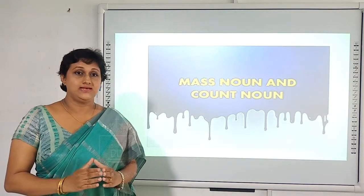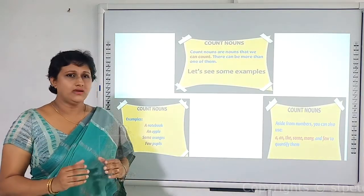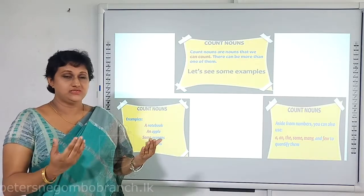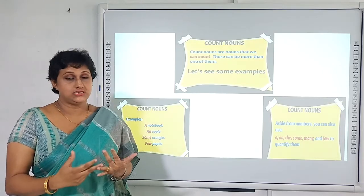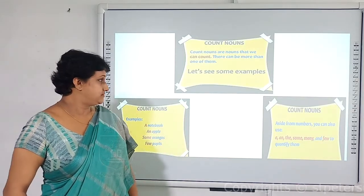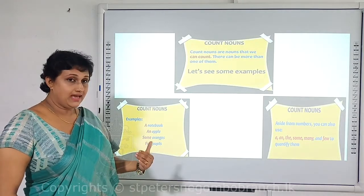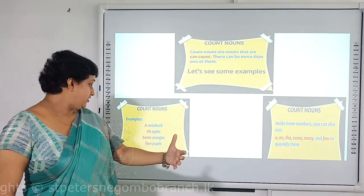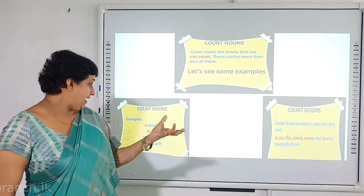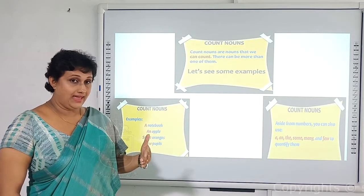Moving on to the next classification: mass nouns and count nouns. Count nouns are nouns that we can count — for example, five pencils. Aside from numbers, words like a, an, the, some, many, and few can be used to quantify count nouns. Examples include a notebook, an apple, some oranges, and few pupils.